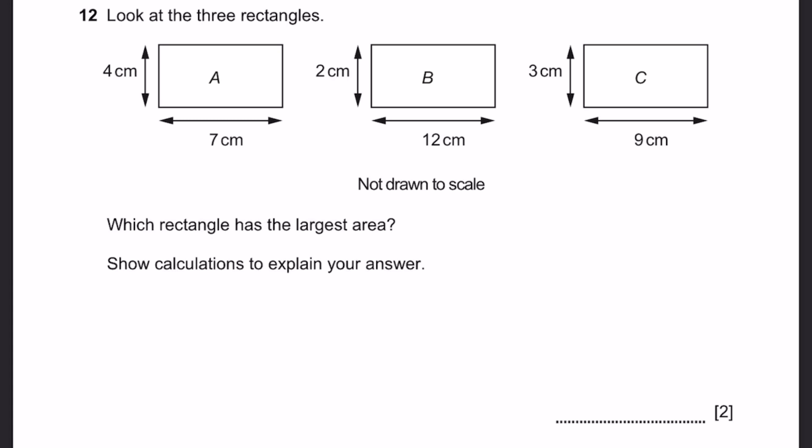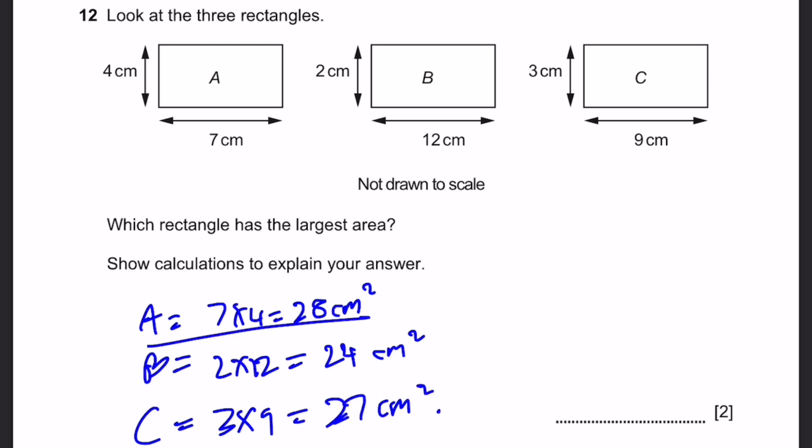Question 12. Look at the three rectangles. Which rectangle has the largest area? Show calculations to explain the answer. Rectangle A has 7 times 4, 28 centimeters squared. Rectangle B is 2 times 12, which equals 24 centimeters squared. Rectangle C equals 3 times 9, which equals 27 centimeters squared. Rectangle A has the highest. So that's the answer.